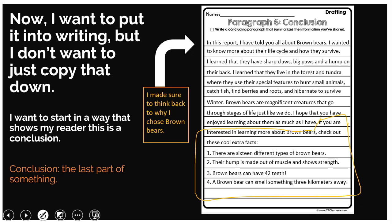She has information about characteristics, habitats, diet, survival, and life cycles, which is what you want to try and summarize. Even if you choose the most important facts from each section to write into your conclusion, that is perfect — just make sure it's in your own words. If you did do the extra facts part, you can add them in. Miss Julia says: 'If you are interested in learning more about brown bears, check out these cool extra facts. There are 16 different types of brown bears. Their hump is made out of muscle and shows strength. Brown bears can have 42 teeth, and a brown bear can smell something three kilometers away.' So she's added in her extra facts to her conclusion, which is perfect.